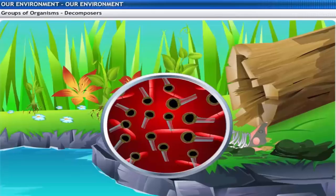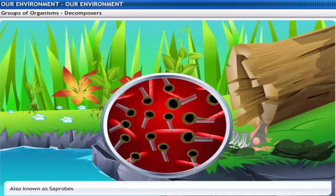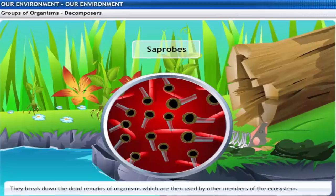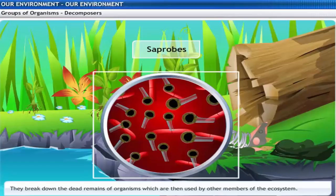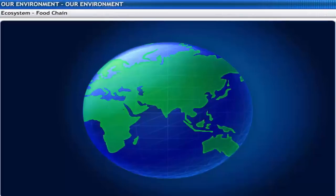Let me sum it up. Decomposers are also known as organisms of decay or saprobes. They are microorganisms that break down the dead remains and waste products of organisms that can be used by other members of the ecosystem. Bacteria and fungi are examples of saprobes.